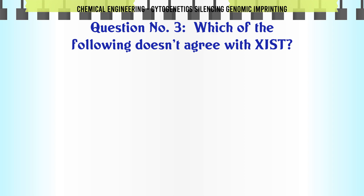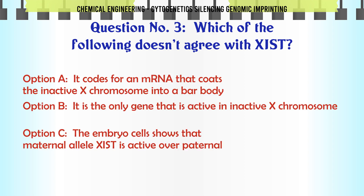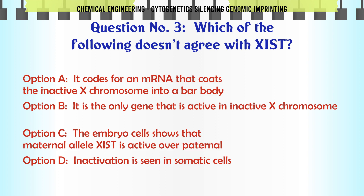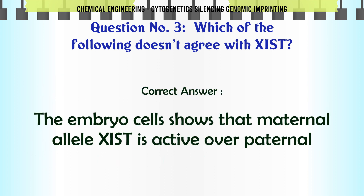Which of the following doesn't agree with XIST? A. It codes for an mRNA that coats the inactive X chromosome into a Barr body. B. It is the only gene that is active in the inactive X chromosome. C. Embryo cells show that maternal allele XIST is active over paternal. D. Inactivation is seen in somatic cells. The correct answer is D: Embryo cells show that maternal allele XIST is active over paternal.